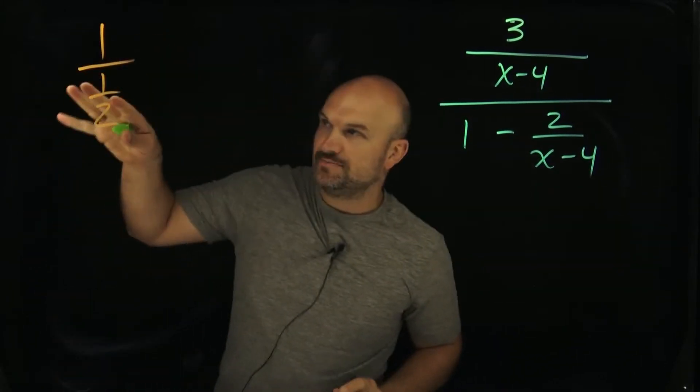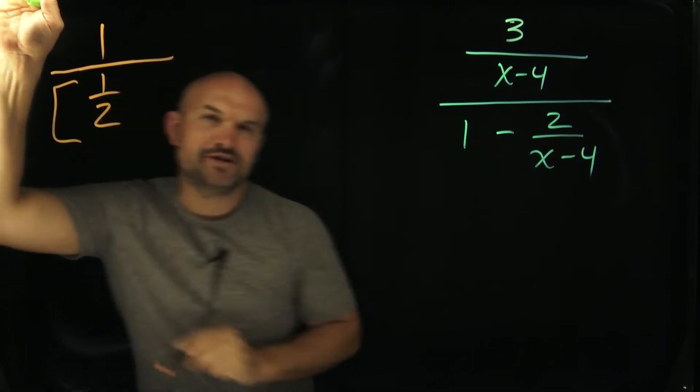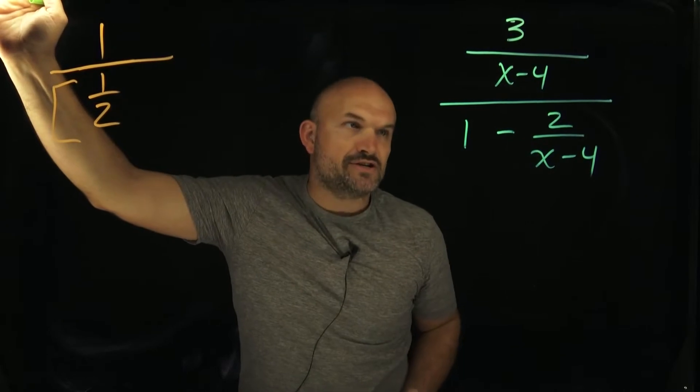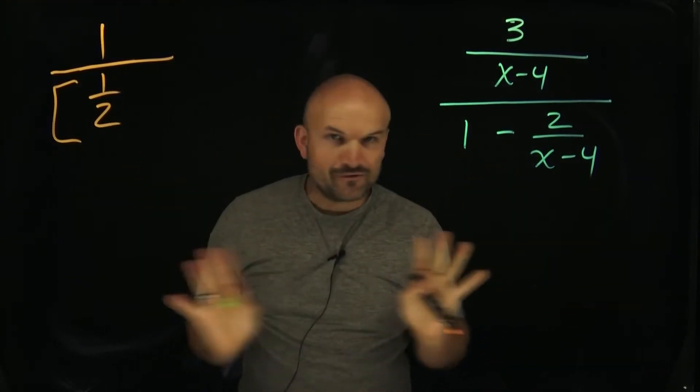In this case, we have a fraction, right? And we have a numerator as well as a denominator. However, in the denominator, notice there's another fraction. And we want to get rid of the fraction, right? We don't want too many fractions. We want one numerator, one denominator, no more fraction bars, okay?